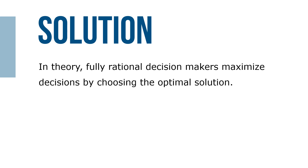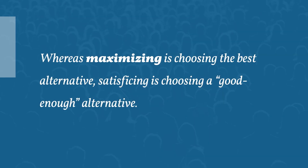In theory, fully rational decision-makers maximize decisions by choosing the optimal solution. In practice, however, limited resources along with attention, memory, and expertise problems make it nearly impossible for managers to maximize decisions. Consequently, most managers don't maximize — they satisfice. Whereas maximizing is choosing the best alternative, satisficing is choosing a good enough alternative.